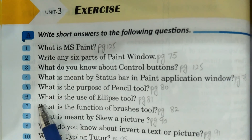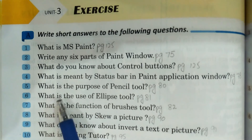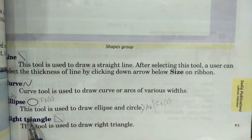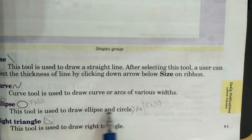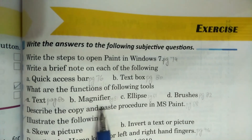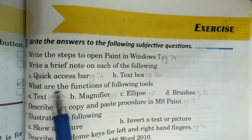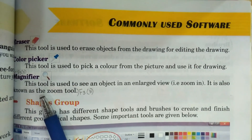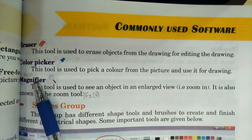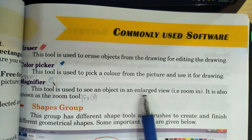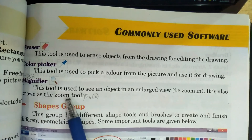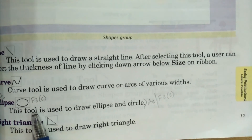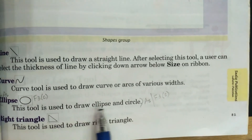Now students, come to the exercise. Today we are going to cover Exercise A, question number 6: What is the use of the ellipse tool? Its answer is on page number 81 — ellipse tool is used to draw ellipse and circle. Exercise F, question number 3: What are the functions of the following tools? Part B — magnify: this tool is used to see an object in an enlarged view, also known as the zoom tool. Part C — ellipse: this tool is used to draw ellipse and circle.